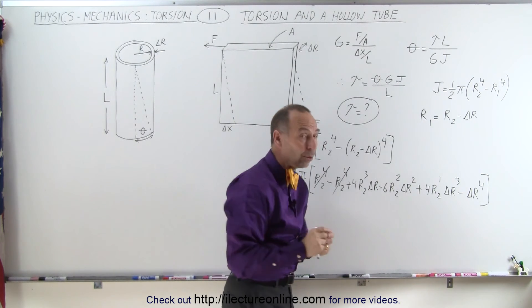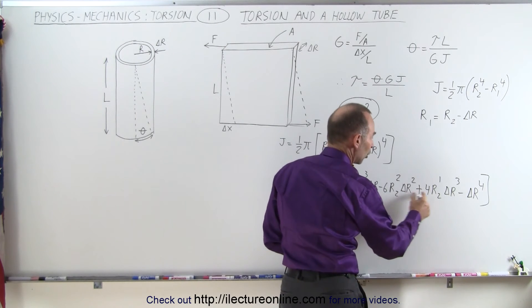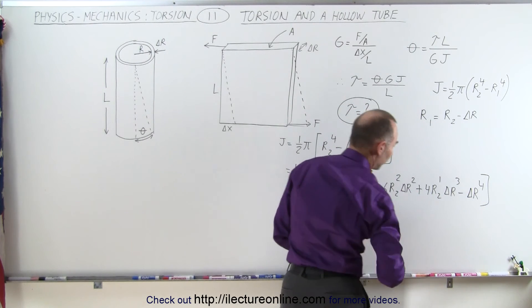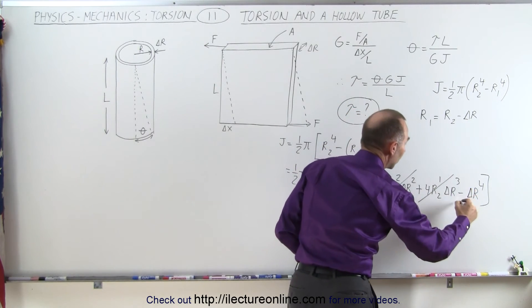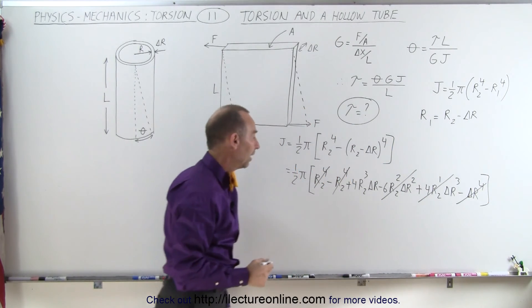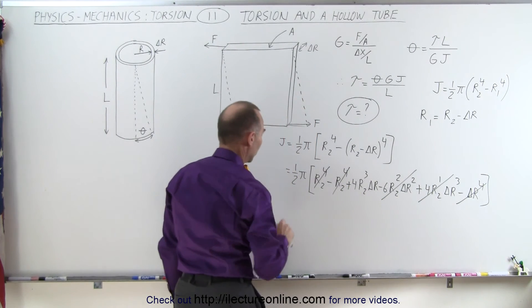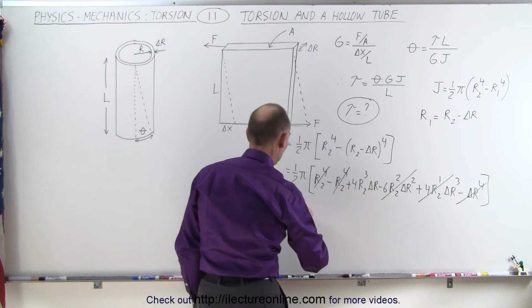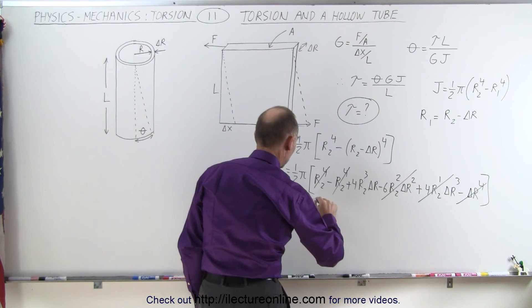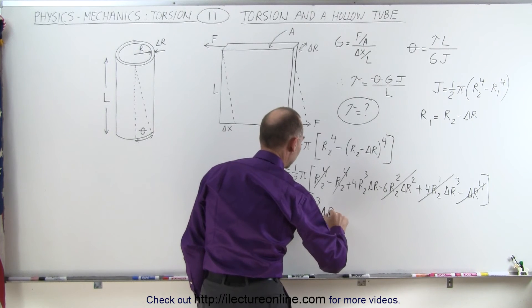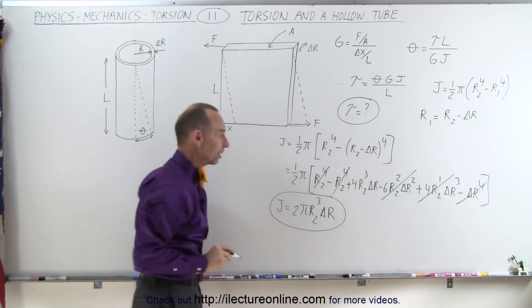And in addition to that, we already know that our delta r is going to be small. So when we square it, cube it, or raise it to the fourth power, those will be such small quantities that in essence we can get rid of these three terms. And all we have left inside the brackets is this term, which will be the surviving term. One-half times 4 is 2, so this becomes 2π times r₂ cubed times delta r as being our torsion constant in this particular case.